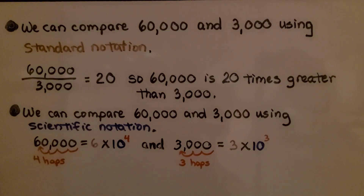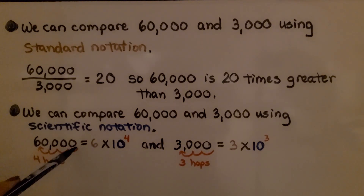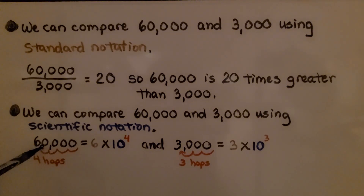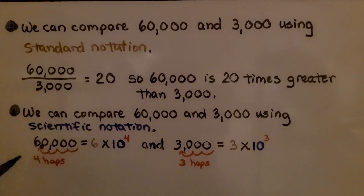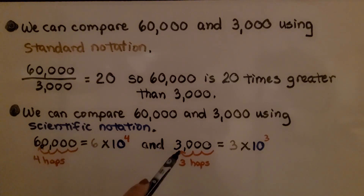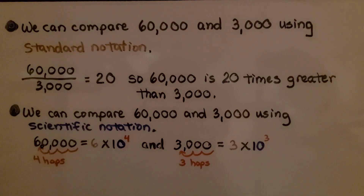We can also compare 60,000 and 3,000 using scientific notation. We write them in scientific notation first. 60,000 — we count 1, 2, 3, 4 hops — so we write it as 6 times 10 raised to the fourth power. And 3,000 — we count 1, 2, 3 hops — so we write it as 3 times 10 to the third power.